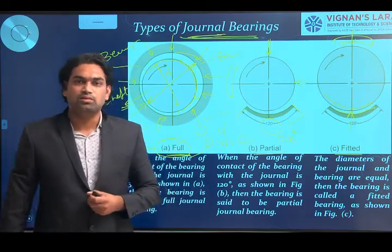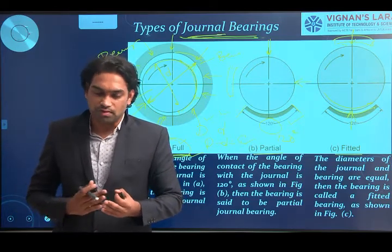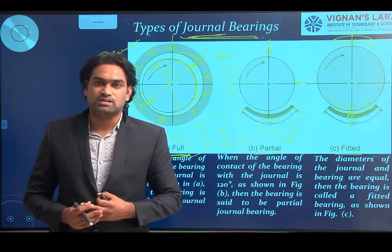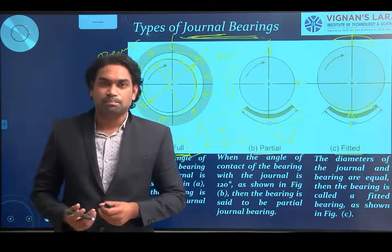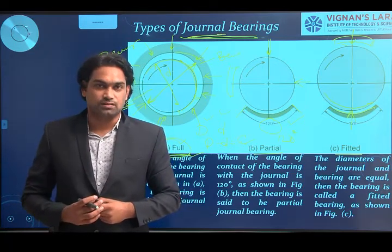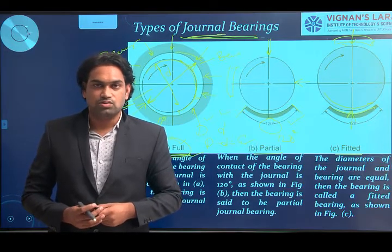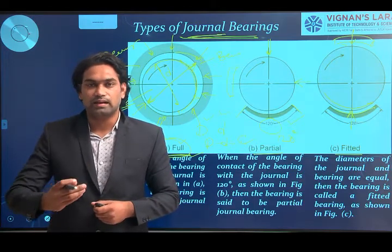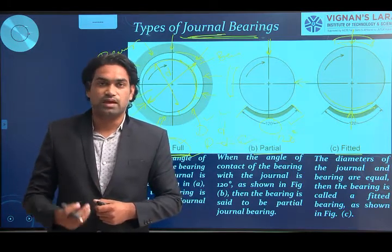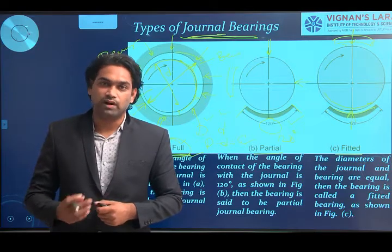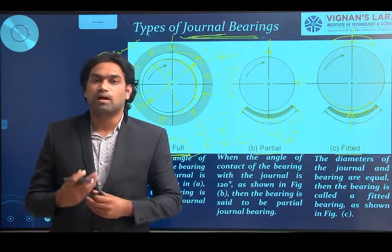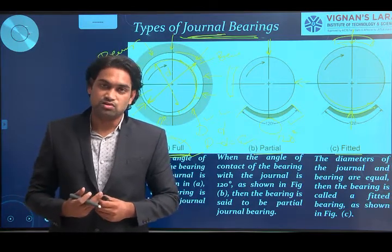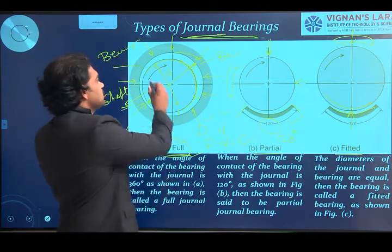Why is this clearance provided between the two surfaces? In a sliding contact bearing, there is always surface contact — metal-to-metal contact — which causes friction. To reduce this friction, we need to apply a lubricant between the two surfaces. The lubricant reduces friction, helps prevent wear, prevents corrosion, and in some cases, because continuous contact generates heat, the lubricant also carries away the heat generated between the two machine components.